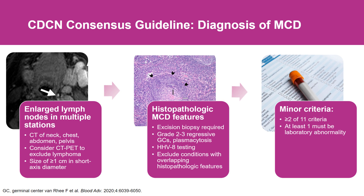Once you look for these particular features, you need to confirm that the patient also has clinical and laboratory abnormalities consistent with multicentric Castleman disease — things like anemia, thrombocytopenia, fluid accumulation, and fever. These minor criteria are required; you need at least two of the 11 minor criteria, with at least one being a laboratory abnormality.